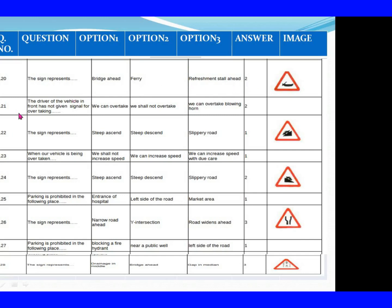Question 121: The driver of the vehicle in front has not given signal for overtaking. Option 1: We can overtake. Option 2: We shall not overtake. Option 3: We overtake blowing horn. The right answer is Option 2: We shall not overtake. Question 122: The sign represents. Option 1: Steep ascent. Option 2: Steep descent. Option 3: Slippery road. The right answer is Option 1: Steep ascent.